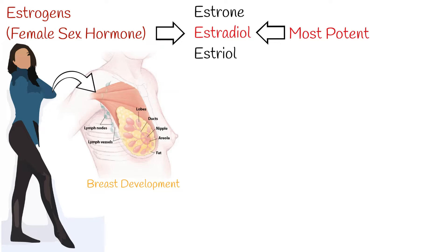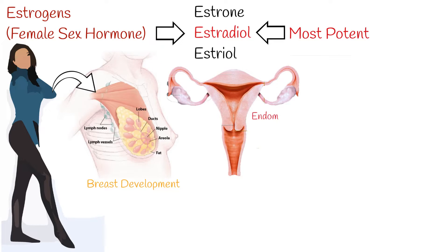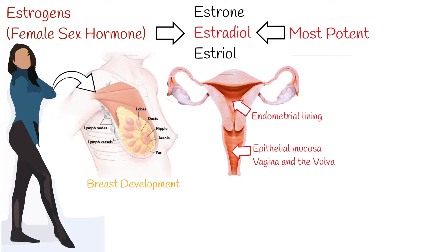Estrogens thicken the endometrial lining in preparation for pregnancy. Vagina: Estrogen supports the proliferation of epithelial mucosa cells of the vagina and the vulva. In the absence of estrogen, the vaginal and vulvar mucosal epithelium becomes thin and presents with symptoms of dryness known as vulvovaginal atrophy.